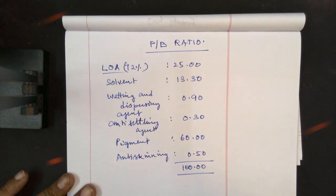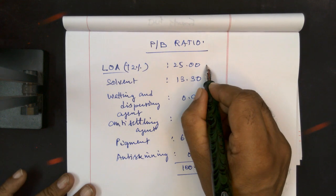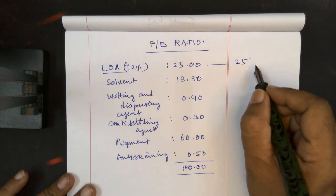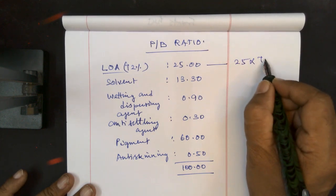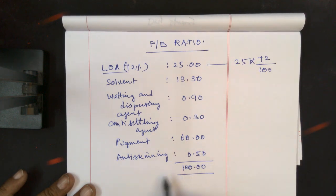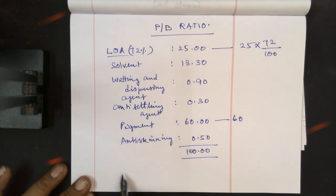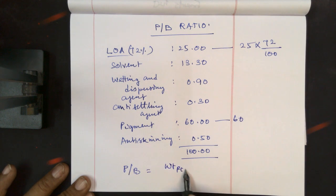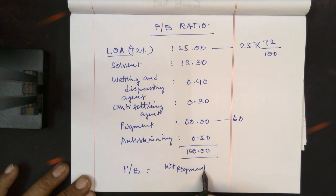Anti-skinning agent. Now, the pigment binder part is 25 into 72%. We have to consider the solid part only, so 72%. And similarly here, it is available as solid only, so 60. Now, what is the pigment-binder ratio? The weight of pigment divided by the weight of...